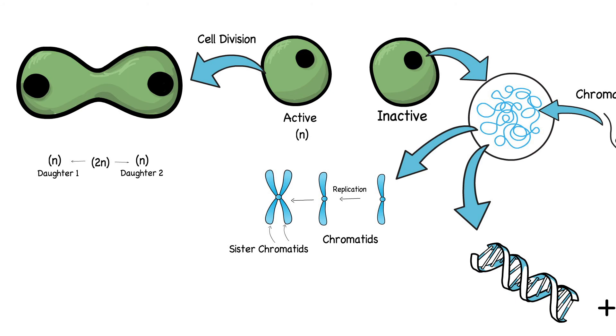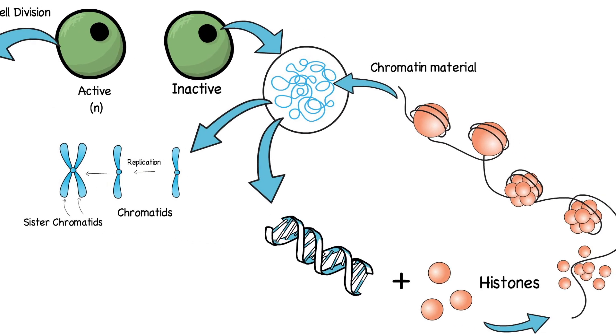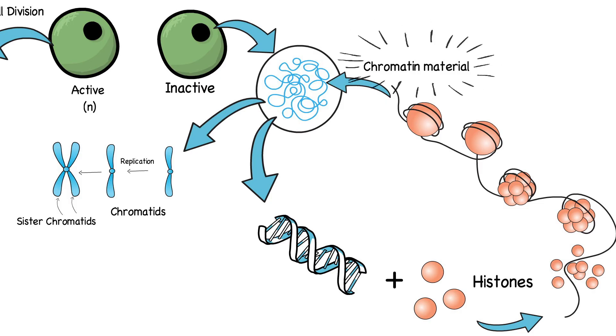Thus, we can say chromatids are actually a chromosome and its copy made during cell division by the cell in order to divide equally among two daughter cells. Whereas, chromatin or chromatin material is the semi-condensed genetic material in a cell before it condenses into chromosomes and is made up of DNA and proteins.